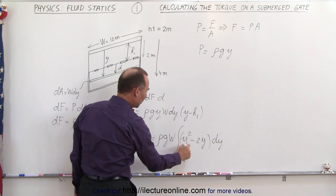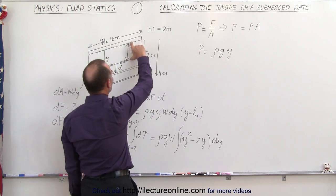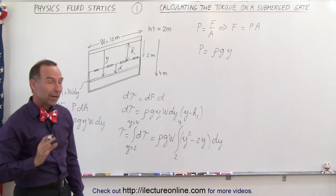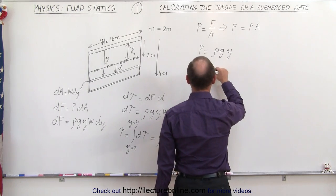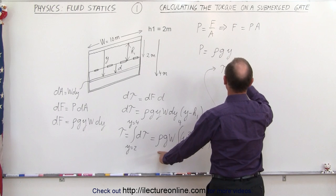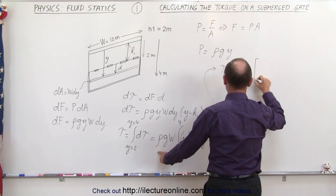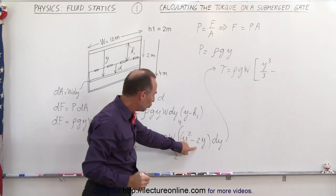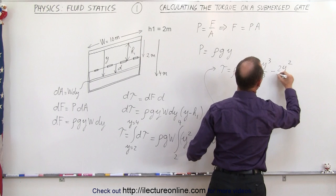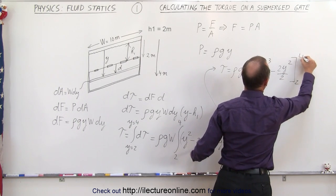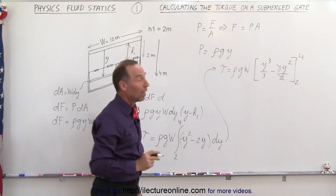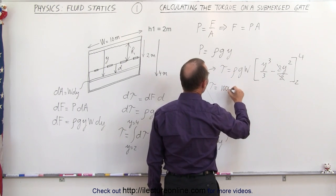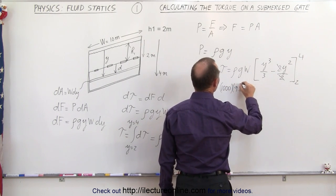Multiplying out: Y times Y gives Y squared, and Y times H1 — since H1 equals 2 — gives 2Y, with a negative sign. So we integrate Y squared minus 2Y from Y equals 2 to Y equals 4. Integrating: Y squared becomes Y cubed over 3, and 2Y becomes 2Y squared over 2, which is Y squared — and those 2s cancel. Now we evaluate from Y equals 2 to Y equals 4.